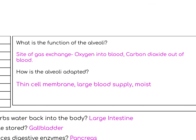What is the function of the alveoli? The alveoli is the site of gas exchange. Remember you've got millions of alveoli. Oxygen will come through them and go to your blood, and carbon dioxide will come from your blood and go in. How is it adapted? It's got really thin cell membranes that oxygen can fit through really easily.